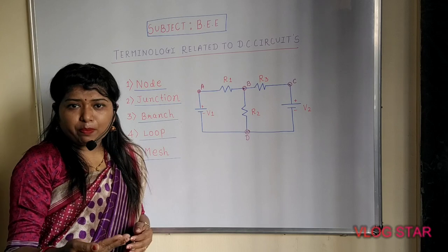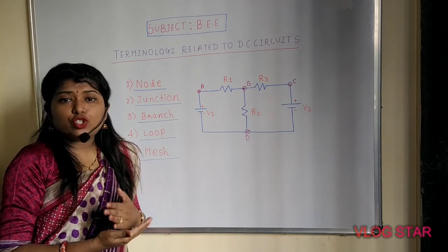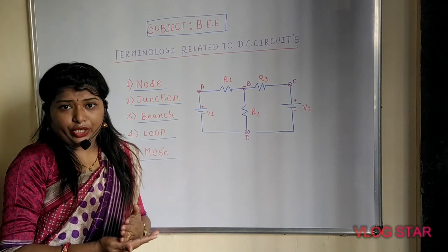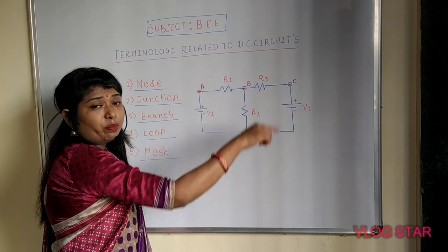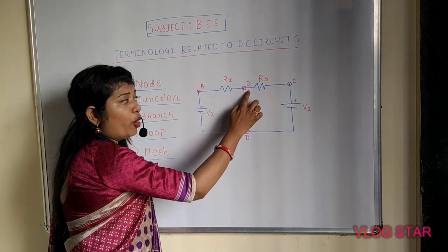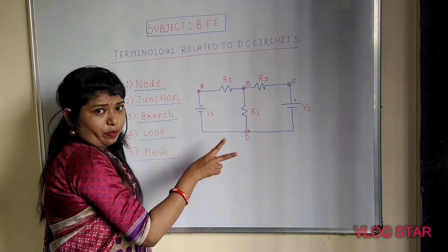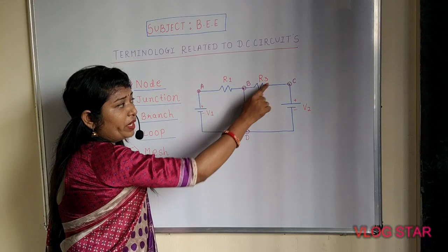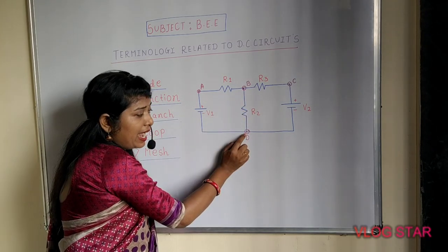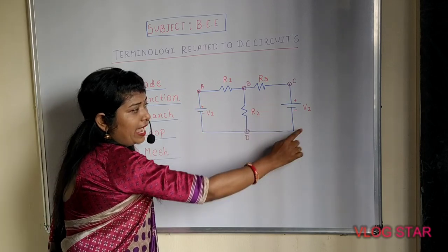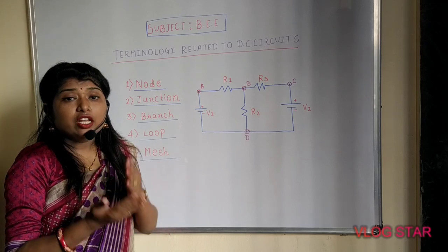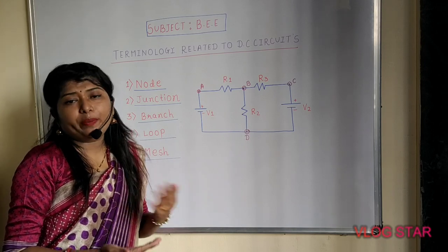Coming to the second important term — junction. Junction is a point where three or more circuit elements are joined together. In this particular circuit, point B and point D are the two junction points. At point B, three circuit elements are connected. Similarly, at point D, R2, V1, and V2 are connected. Junction can be a node, but a node cannot be a junction point.